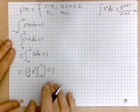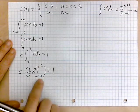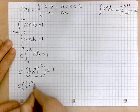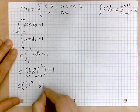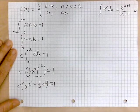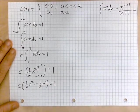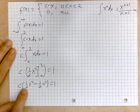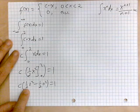So now we have this. We will plug in the upper and lower limits for 2 and 0 here. So c and then we have 1 half of 2 squared minus 1 half of 0 squared equaling 1. Now, 1 half of 0 squared is 0. 1 half of 2 squared is 2.